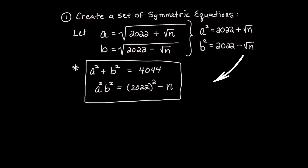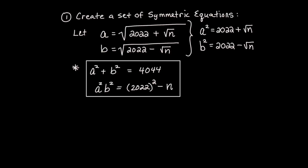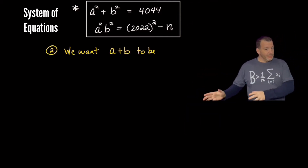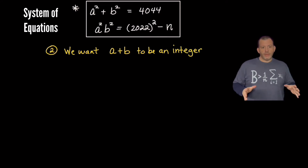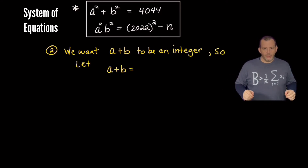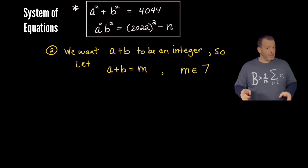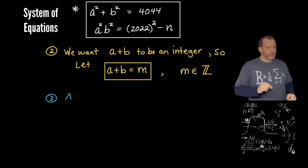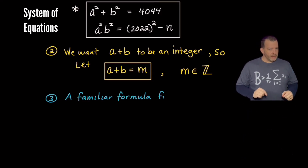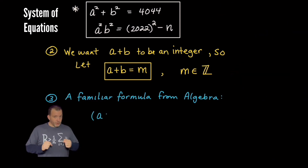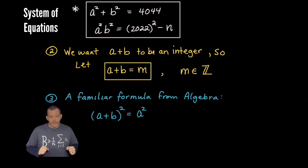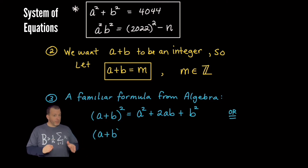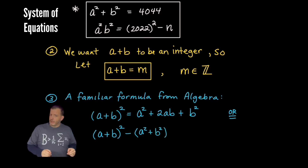Next, our goal is to find a + b as an integer, so we'll build our notion of what a + b should look like. We're going to let a + b equal the integer m. With a little help from a familiar formula from algebra, we're going to put these two things together — if the square of a binomial is expanded and rearranged, we can make a connection between a + b and the product a times b.